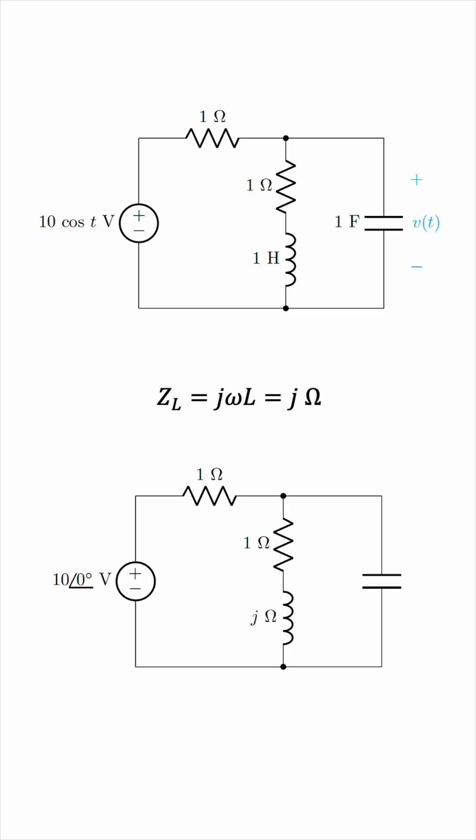A capacitor has an impedance of 1 over J omega C. Again, omega is 1, and the capacitance is 1 farad, giving us 1 over J, which works out to be negative J. The way to do this is to multiply the top and bottom by J, achieving this simplification.